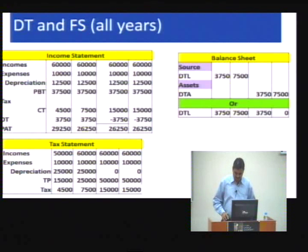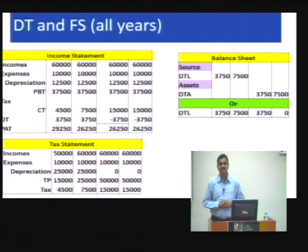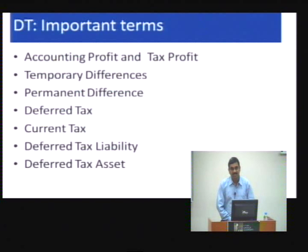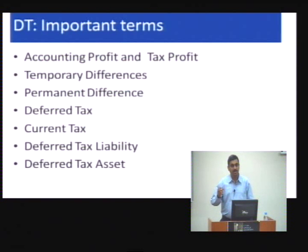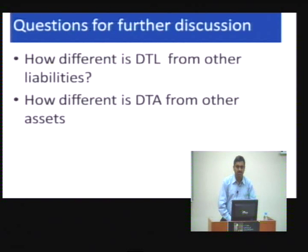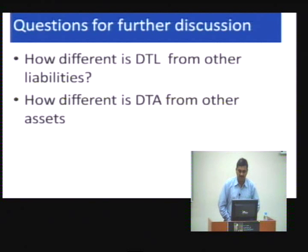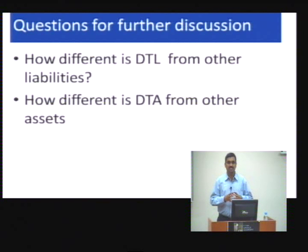Key questions remain: Is DTL truly a liability? Is DTA truly an asset? These are important questions we will address in further discussion. The key terms under accounting for taxation are: accounting profit and tax profit, temporary and permanent differences, deferred tax and current tax, and deferred tax liability and deferred tax assets. We will also explore how investors, analysts, and managers treat DTL and DTA, and what their relevance is.